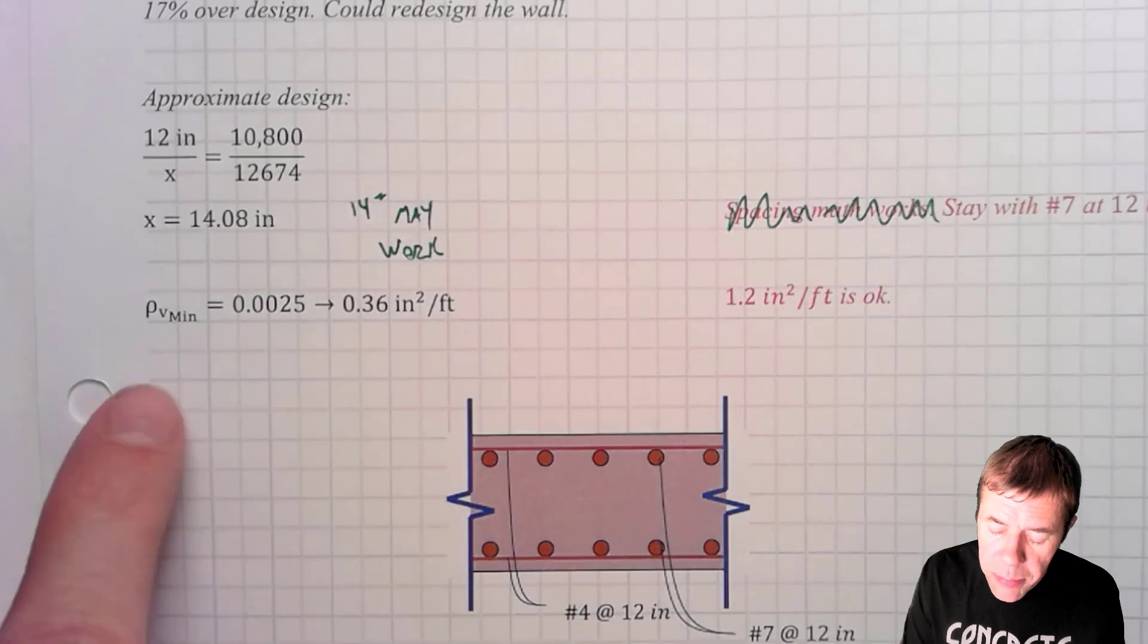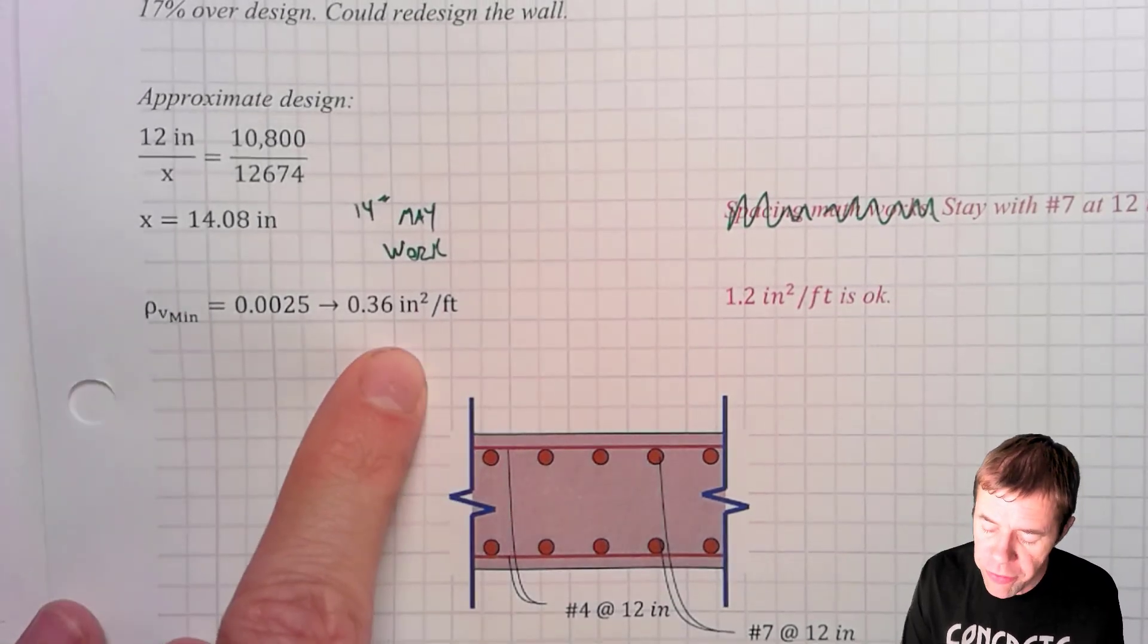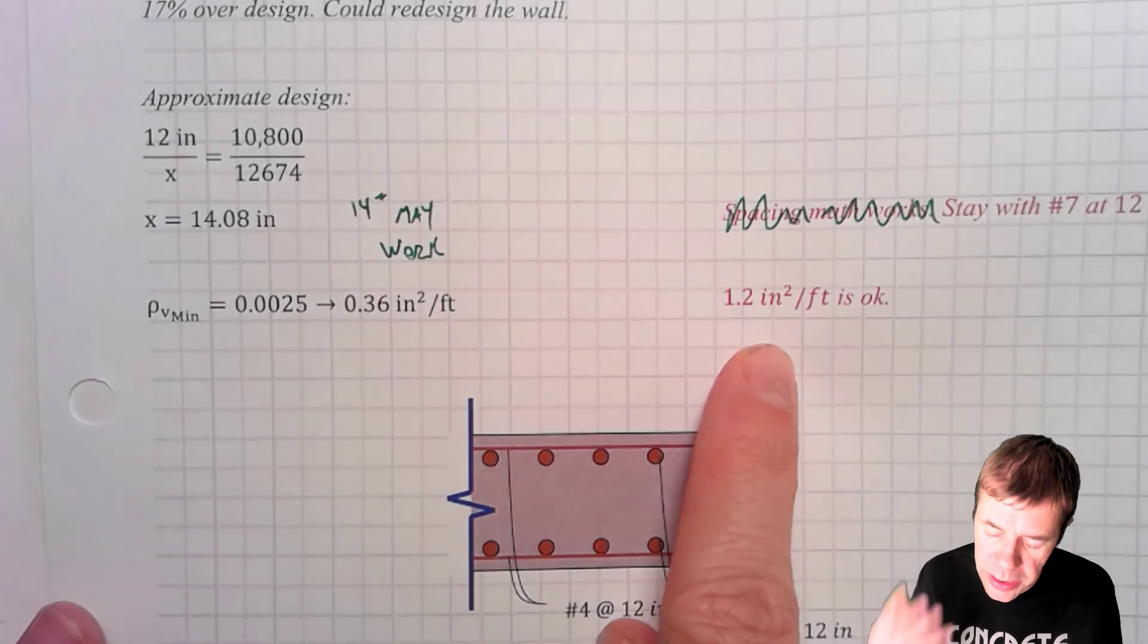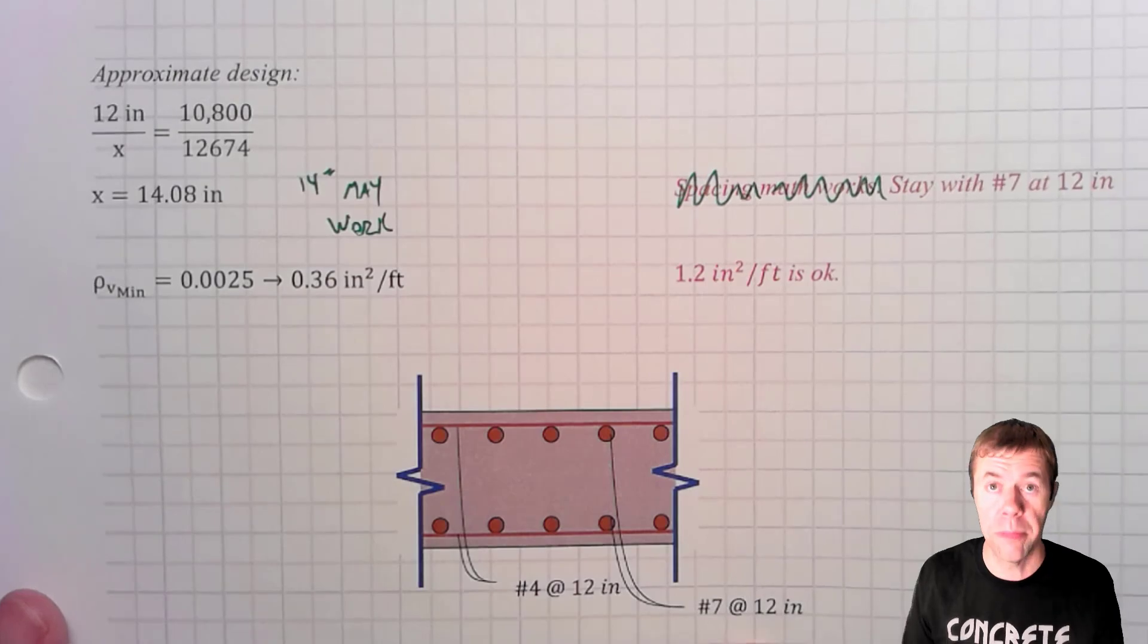So I do have to do check my rho v minimum, and it was 0.36 inches squared per foot, and 1.2 inches squared is going to be fine. Everything's going to be great. So this is what my layout is going to be.